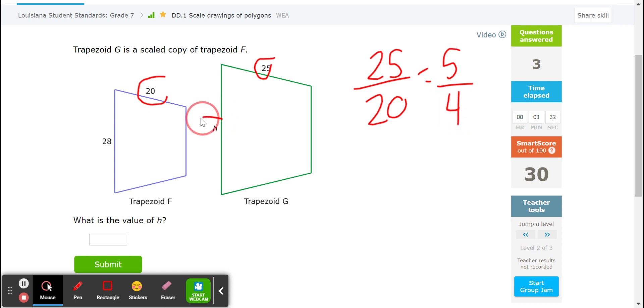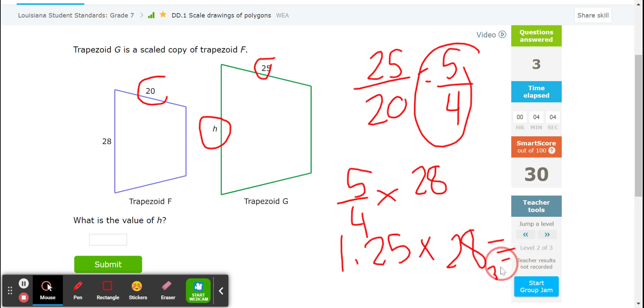And if I need to find the value of H, I'm going to do that 5 fourths times 28. Okay. So we want to use that calculator on questions like this. So do 5 divided by 4. That equals 1.25. And then multiply that by the 28. And this equals 35. So the value of H is 35.